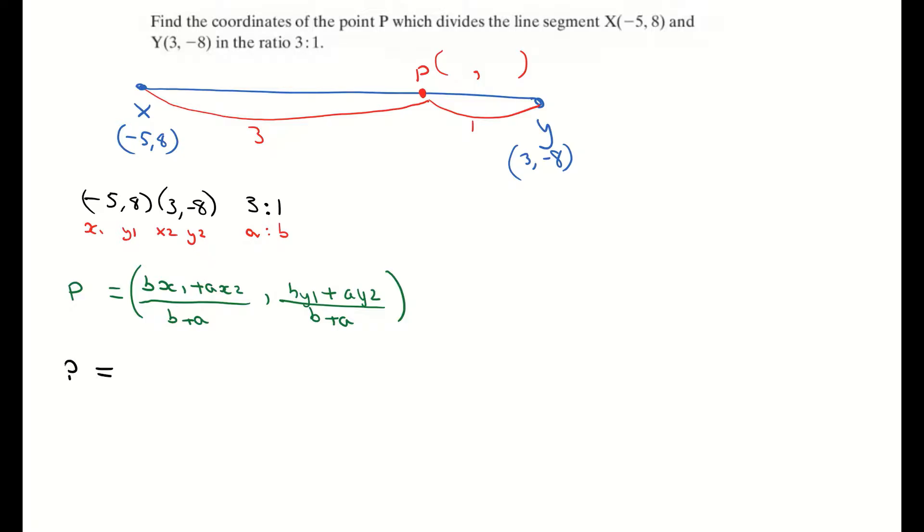So our coordinates P is equal to B times X1, which is 1 times (-5) plus A times X2, which is 3 times 3. And that's all divided by B plus A, which is 1 plus 3.